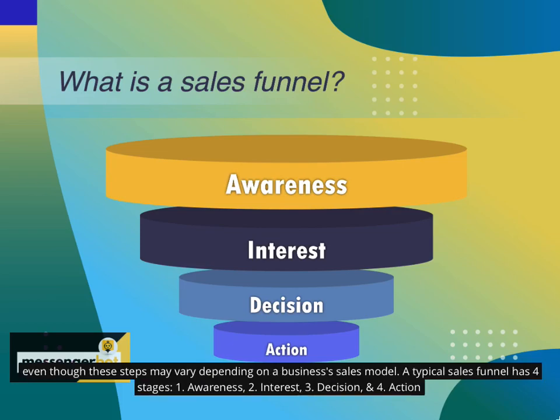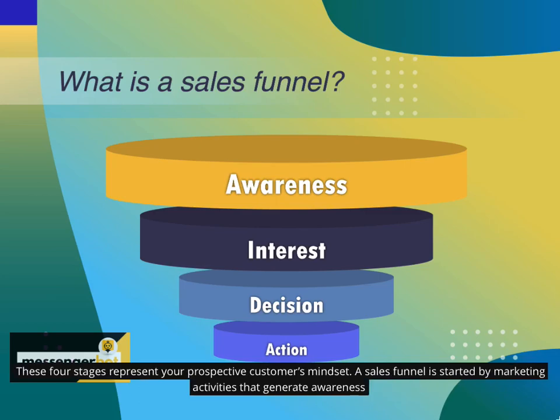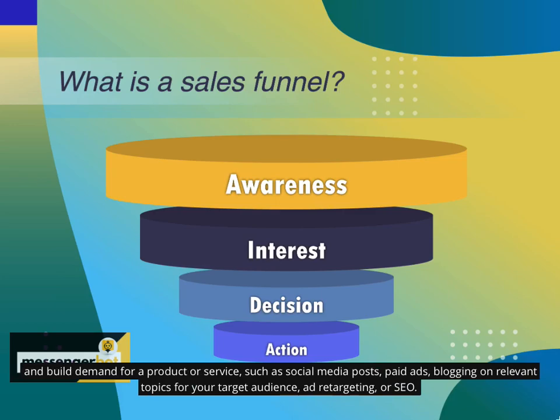Even though these steps may vary depending on a business's sales model, a typical sales funnel has four stages: 1. Awareness, 2. Interest, 3. Decision, and 4. Action. These four stages represent your prospective customer's mindset. A sales funnel is started by marketing activities that generate awareness and build demand for a product or service, such as social media posts, paid ads, blogging on relevant topics for your target audience, ad retargeting, or SEO. At this stage, the prospects are in huge amounts.